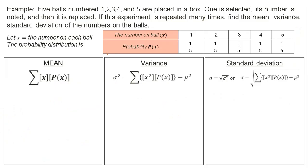First problem: Five balls numbered 1, 2, 3, 4, and 5 are placed in a box. One is selected, its number is noted, and then it is replaced. If this experiment is repeated many times, find the mean, variance, and standard deviation of the numbers on the balls.